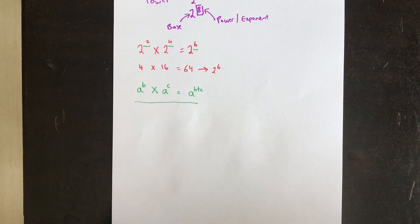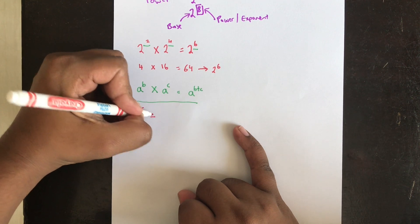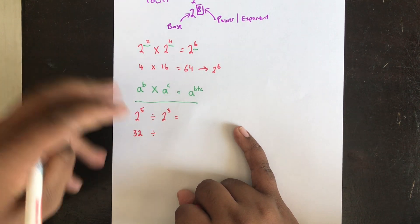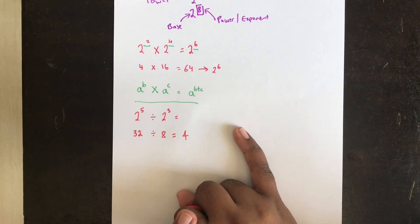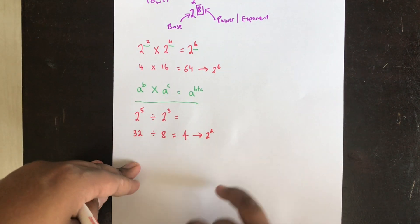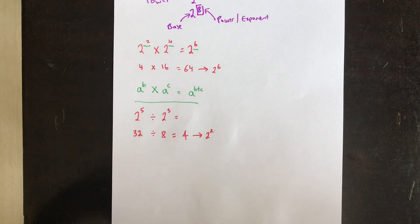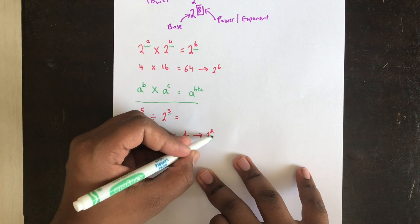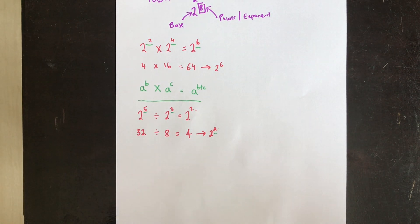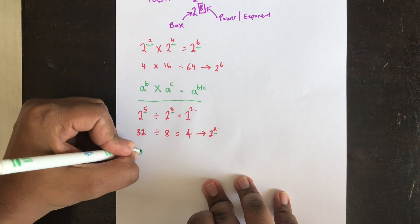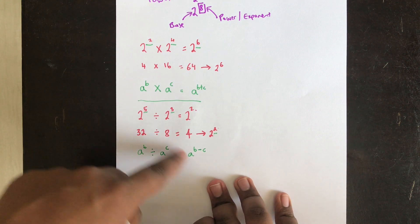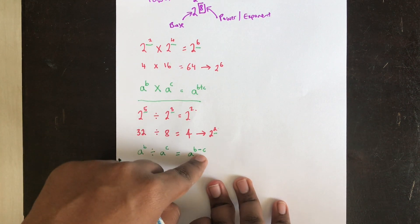Moving on, if we have 2 power 5 divided by 2 power 3: 2 power 5 is 32 divided by 8, which is 4. 4 can be expressed as 2 power 2. We notice the powers subtract — 5 minus 3 gives 2. Therefore 2 power 5 divided by 2 power 3 equals 2 power 2. The rule is: a power b divided by a power c equals a power b minus c.